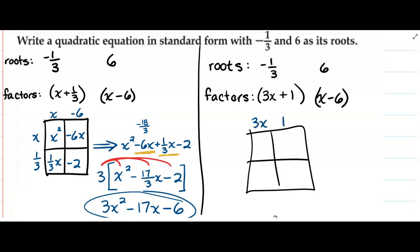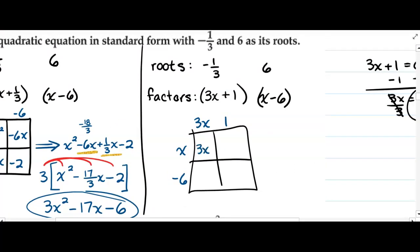3x, 1, x, minus 6, you end up with 3x² + x - 18x - 6.